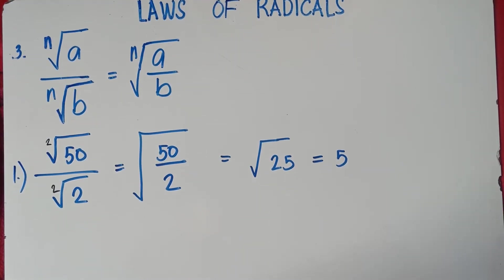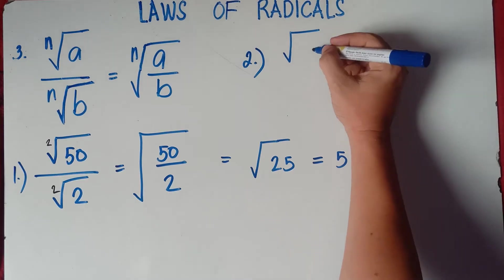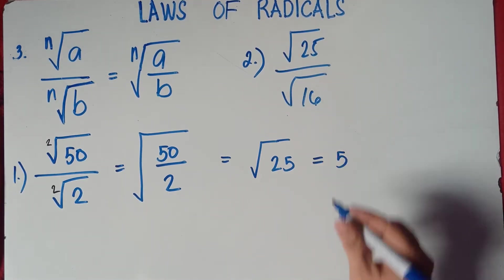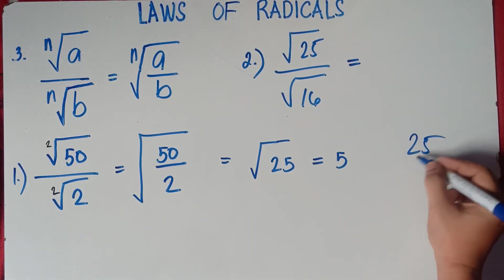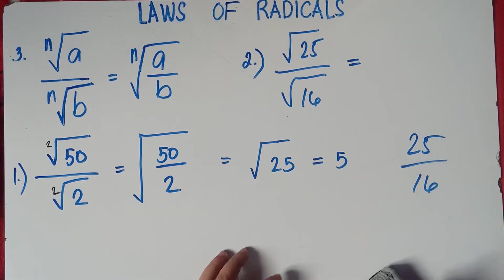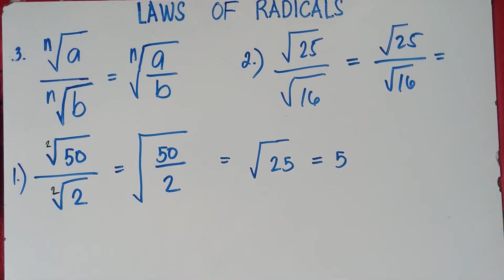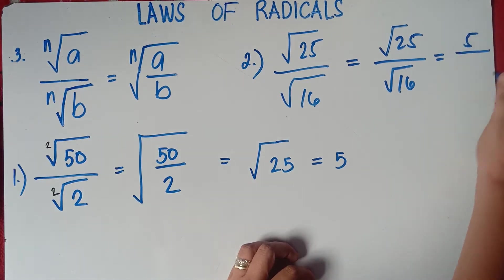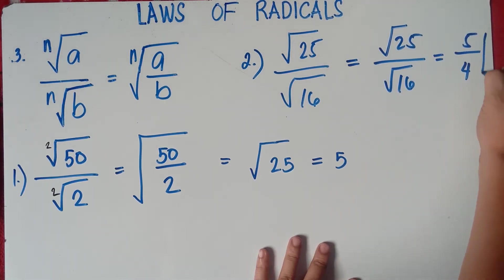Let's try example number 2. What if you have the square root of 25 divided by the square root of 16? Check the radicands — can we divide 25 by 16? No, we cannot, because 25 divided by 16 gives a decimal answer, and we're not allowed to have a decimal. So we do it individually: square root of 25 over square root of 16. The square root of 25 is 5, and the square root of 16 is 4. Therefore, our answer is 5 over 4.